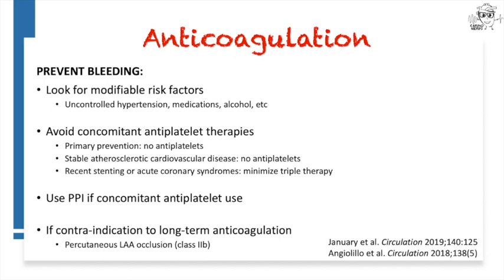A patient with recent stenting or acute coronary syndromes requires cardiology involvement. The key point is to minimize triple therapy — aspirin, clopidogrel, and anticoagulation — for the minimum duration possible, and in most patients you can avoid it altogether. That depends on the type of stenting; complex interventions may require triple therapy. Patients on anticoagulation and concomitant antiplatelet should be on a PPI. And don't forget the option of percutaneous left atrial appendage occlusion for stroke prevention if there's a contraindication to long-term anticoagulation — involve cardiology or electrophysiology in that decision.